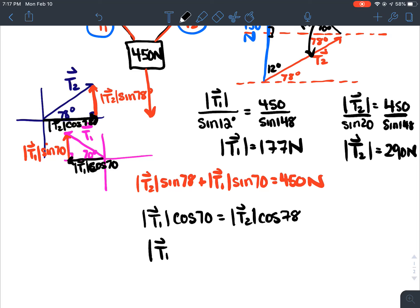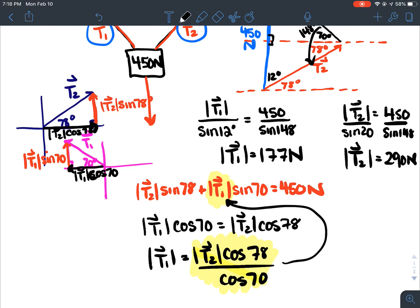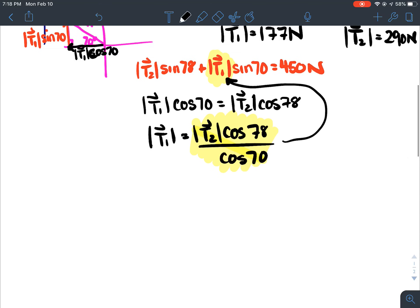So, for example, if I wanted to isolate T1. So, I could say it's equal to T2 cos 78 divided by cos 70. So, now I've just made an expression for T1, which is this.